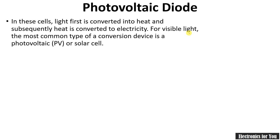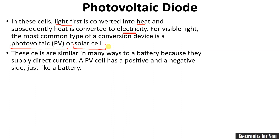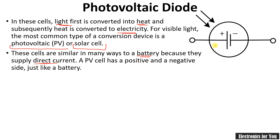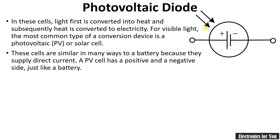A photovoltaic diode is also known as a photovoltaic cell. It first converts light energy into heat, and then heat energy is converted into electricity. For visible light, the most common conversion device is the photovoltaic or solar cell. These cells are similar to a battery because they supply direct current, and in the symbol you can see a cell with a positive and negative terminal, with an arrow indicating that light falls on it.